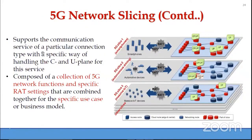Network slicing is realized using a specific connection type with a specific way of handling the control plane and user plane. There are access nodes, cloud nodes, and network nodes — three different kinds. The control plane and user plane are handled using different kinds of equipment nodes.